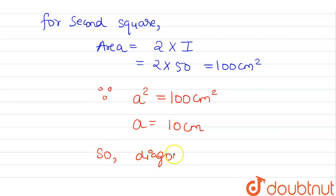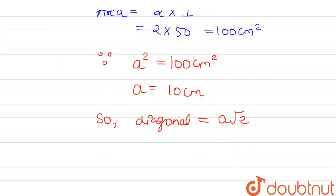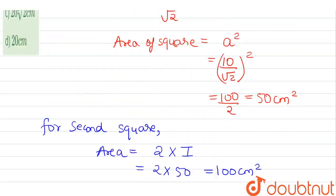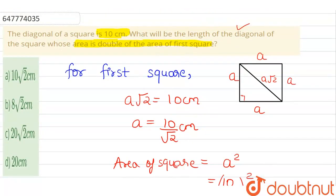That is, you can say easily, how much will it be? 10√2 cm. So the second square's diagonal will be 10√2 cm. Have you seen which option will be correct?